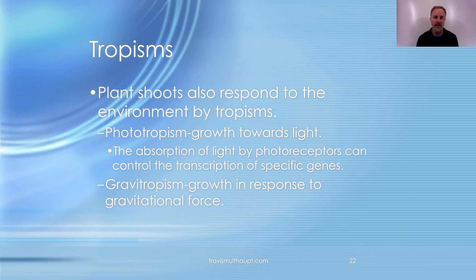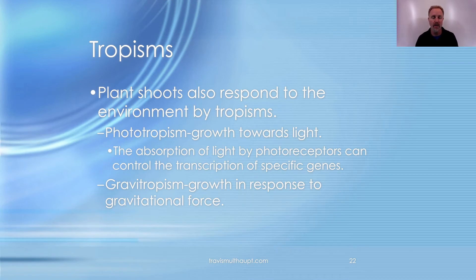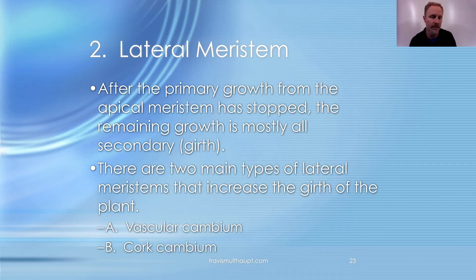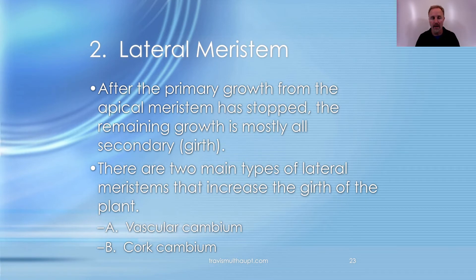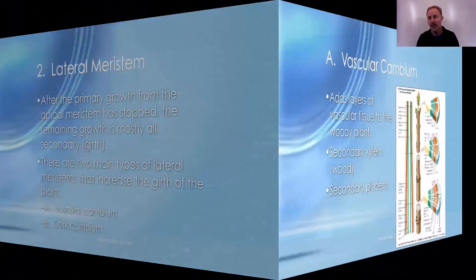There are various tropisms to know. Phototropism is a growth response to light — the absorption of light by cells turns on genes that allow growth. Gravitropism is a growth response to gravity. The lateral meristem takes over once primary elongation has stopped — this is where the plant gets wider. There are two types of lateral meristems: the vascular cambium and the cork cambium.